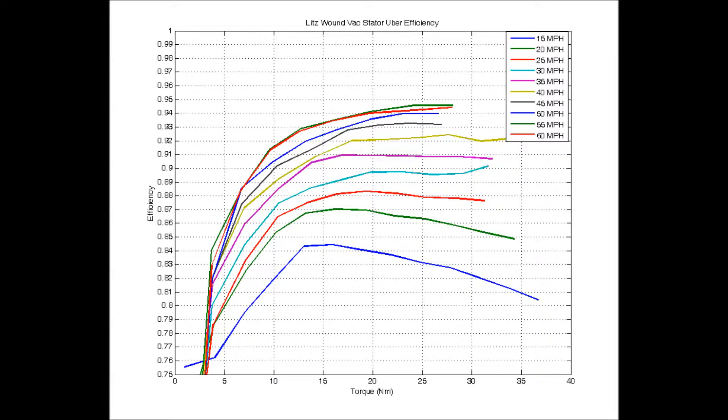Sweeping from low to high torque set points at various system velocities allows us to construct efficiency maps like this one. This is helpful as it shows us which speed and torque operation points are optimal and gives us valuable power-to-drive data that helps us determine cruising velocity on a solar car race.